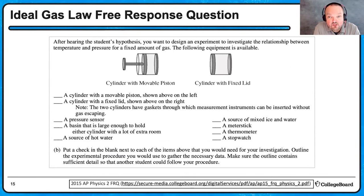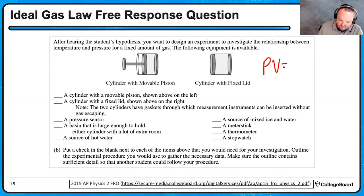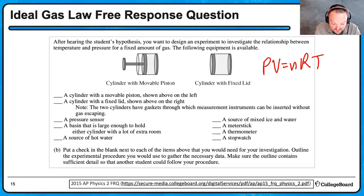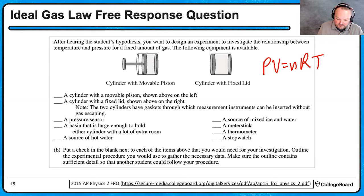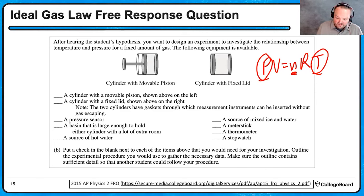Here's an experimental design question — also about the ideal gas law. A student wants to design an experiment to investigate the relationship between temperature and pressure for a fixed volume of gas. Write out the ideal gas law to think through what's going on. The student wants to vary temperature and see how it affects pressure, keeping number of moles constant. The volume also needs to stay constant. The equipment available includes a cylinder with a movable piston and a cylinder with a fixed piston — I want the fixed one to keep volume constant.